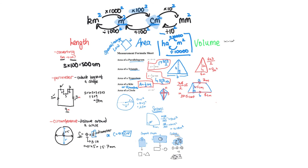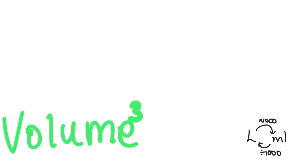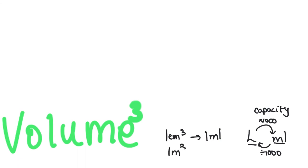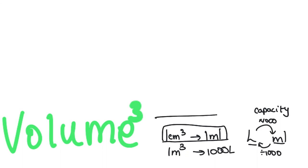We then come to volume. Volume is something cubed — kilometres cubed, metres cubed, centimetres cubed, millimetres cubed — and conversions are all cubed accordingly. You might also think of volume as using litres for measuring what's inside a 3D shape, which is called capacity. One centimetre cubed equals one millilitre, and one metre cubed equals one thousand litres. It's easiest to convert to centimetres cubed first, then convert to millilitres.